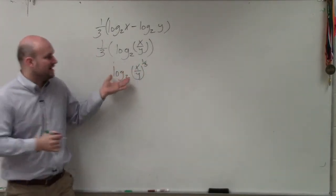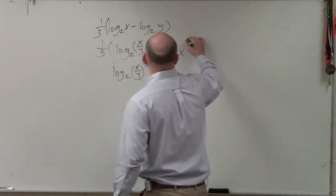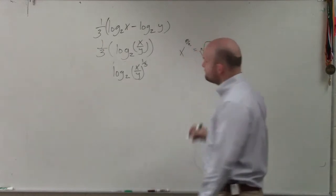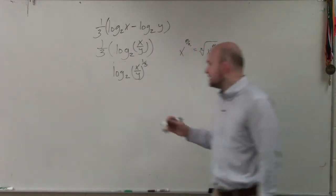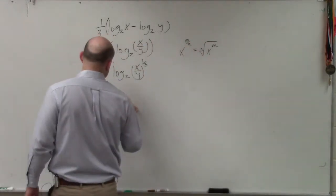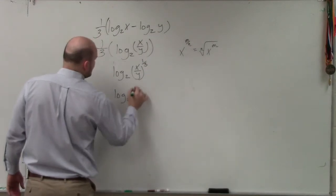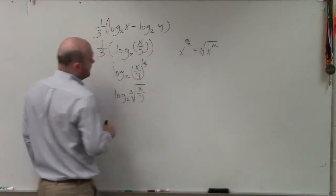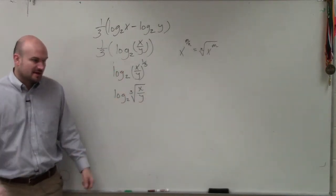Well, again, going back to my x to the m over n is equal to the nth root of x to the m. So we can simplify this by using a radical. We can rewrite this as log base 2 of the 3rd root of x over y. And that's really x over y to the first power, but I don't need to write that.